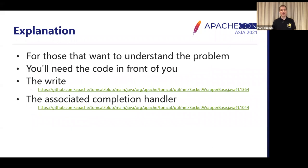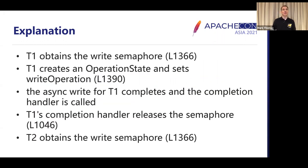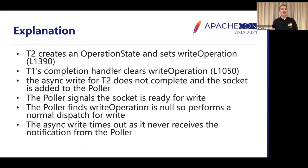For those who want to understand exactly what was going on, the link to GitHub is there — it's SocketWrapperBase. Think of it in terms of two threads, T1 and T2, both trying to write to the output at the same time, both trying to get the semaphore. Thread one gets the semaphore first, creates its operation state for the asynchronous write and saves it. That asynchronous write then completes, the completion handler is called, says it doesn't need the semaphore anymore. Thread two takes the semaphore, creates its operation state and writes it. Meanwhile, thread one's completion handler continues and clears the operation state — but it clears thread two's state because thread two overwrote thread one's. Those things are happening in the wrong order.